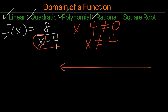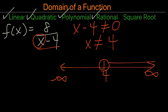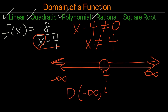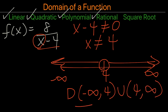When we write the interval notation, 4 will be an open circle, and any value to the left and right of it will work. So the domain will be written as negative infinity to 4, union 4 to infinity.